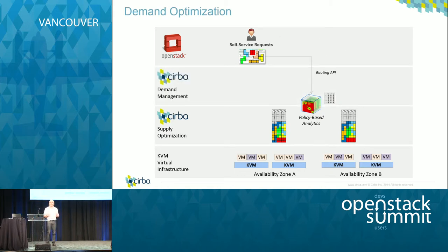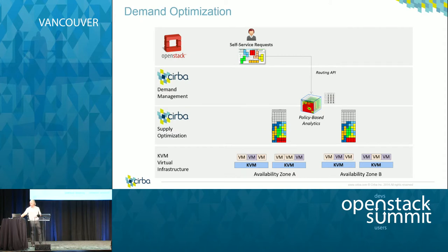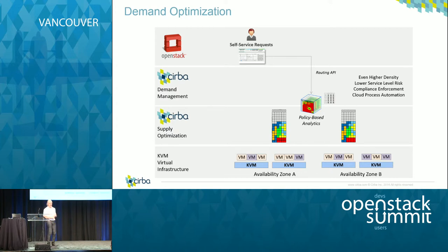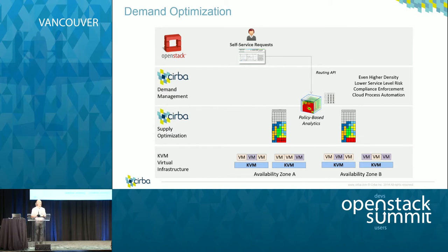If you add demand management with an intelligent routing and reservation system, the ability is to have those types of requests come through and programmatically ask Serba where to route the workload — what's the best place for it to run. The analytics look at the requirements of that self-service request and match them to the amenities and available space of existing locations where that workload can run. Think of it as Hotels.com: requirements of a guest, amenities of a hotel, and now we're matching those things up. This results in really high density, lower service level risk, compliance enforcement, and a cloud process automation system. The user doesn't notice anything different — there's just an API call that comes in and we respond with the best place for it to run.